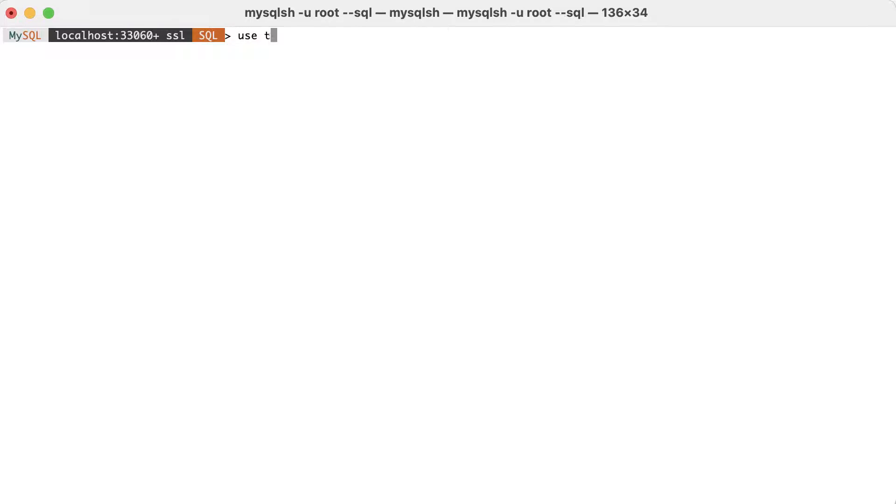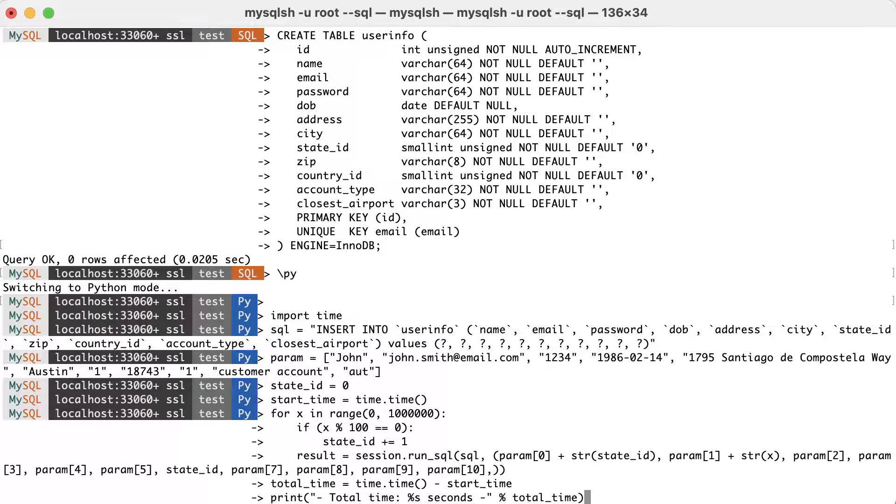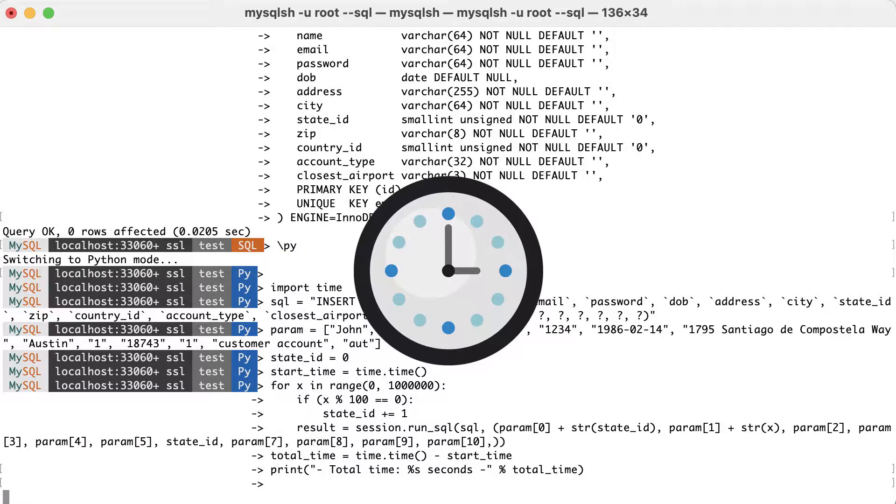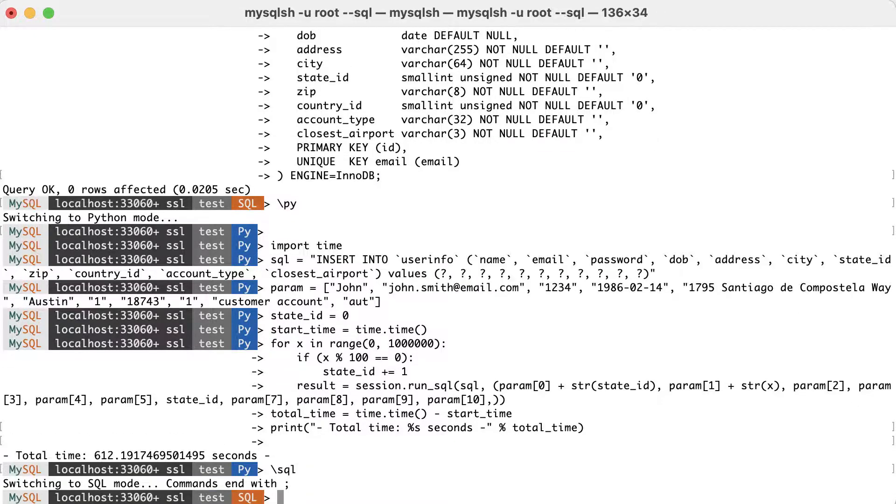Now, let's execute the populate script. Switch to Python in MySQL shell and copy-paste the script. And now, we wait for it to insert one million rows. We are ready now to execute the benchmark tests.